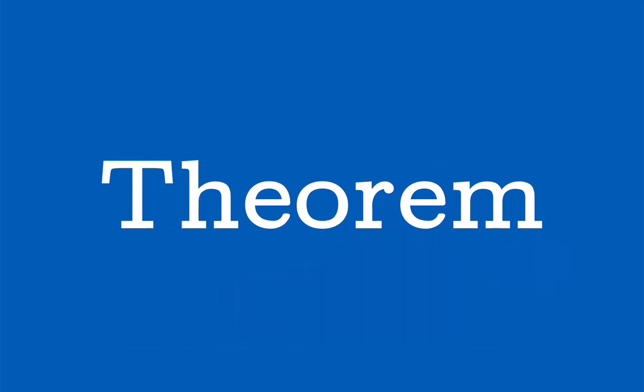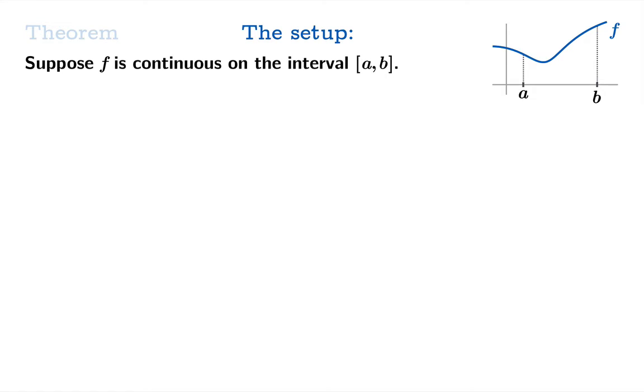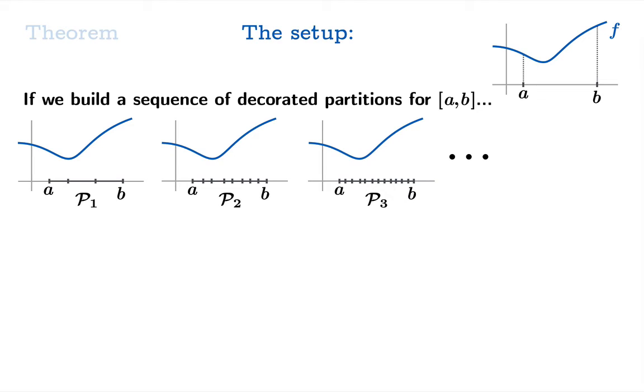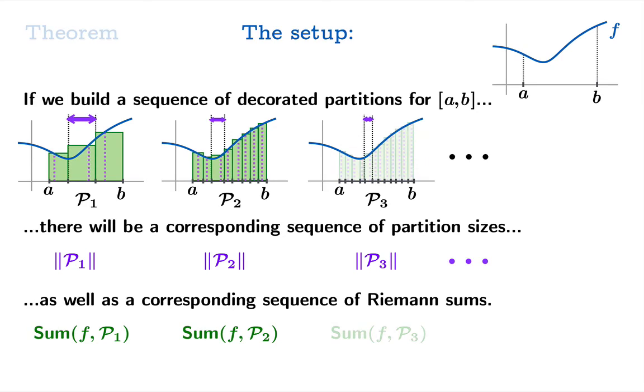Now it's time for a big theorem of the video. It's going to require a little bit of a setup. So please just bear with me. Suppose f is continuous on the interval from a to b. If we build a sequence of decorated partitions you're going to get along for the ride two other sequences of numbers. You can measure the partition sizes and so you'll get a sequence of partition sizes and you can also just calculate Riemann sums. So you'll get a sequence of numbers corresponding to those calculations as well. So a sequence of partitions yields two other sequences of numbers: the sequence of partition sizes and the sequence of Riemann sums.